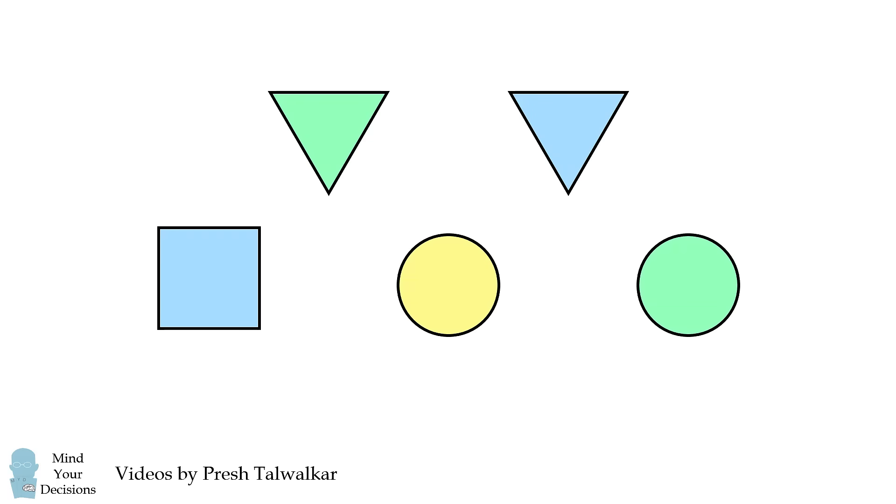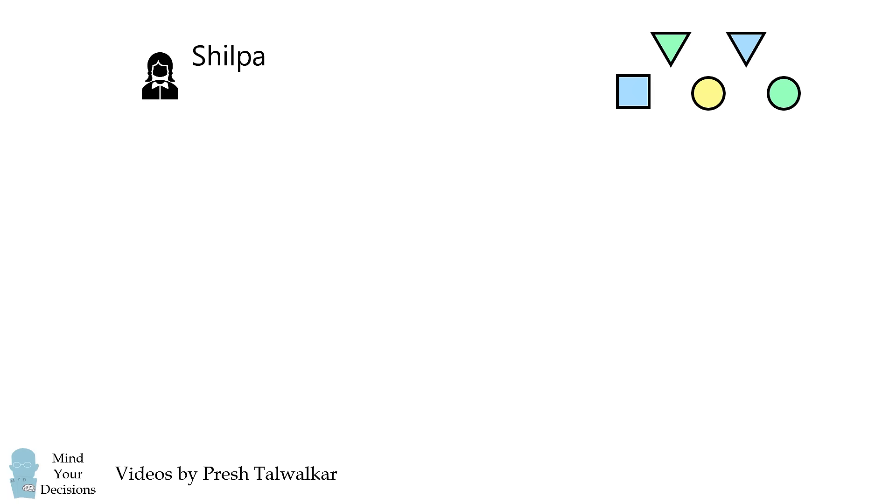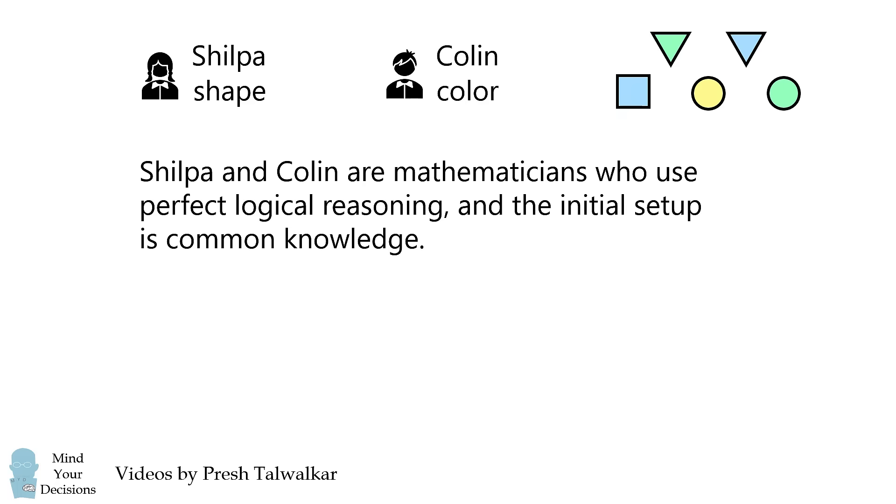A prize is placed under one of five objects. Shilpa is privately told the shape of the object, and Colin is privately told the color of the object. Shilpa and Colin are mathematicians who use perfect logical reasoning, and the initial setup is common knowledge.